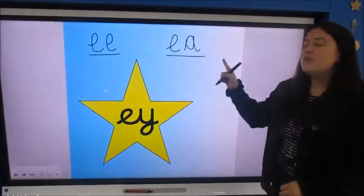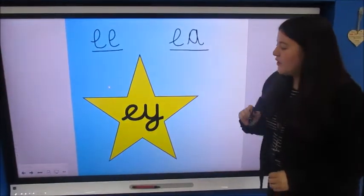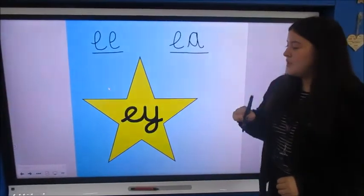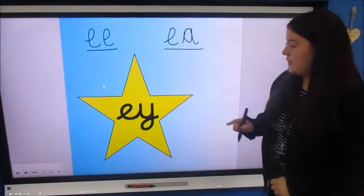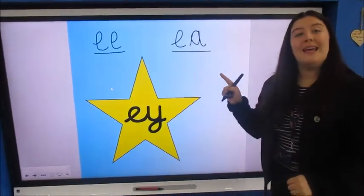And we've also learnt that an E and an A make E. So we've got three different spellings there, year one, of the E sound. But today we're looking at this spelling in our star. So well done, an E and a Y make E.